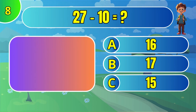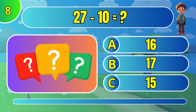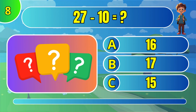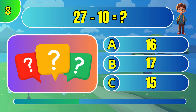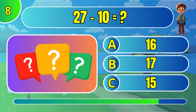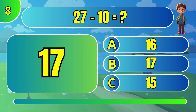What is 27 minus 10? The answer is C: 11.